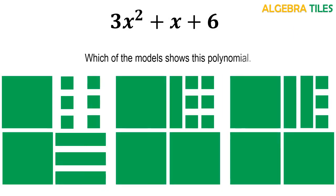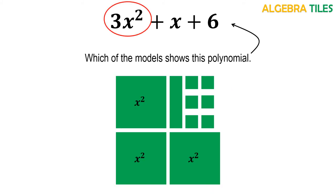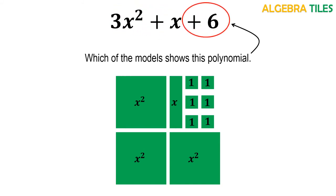I am giving you 3 models and you are supposed to pick the one which correctly shows the given polynomial. You can easily see that the middle model is the right one, because the polynomial has 3x squared, 1x, and 6 ones tiles. This is how we convert the abstract concept of algebra into something we can see, touch, and work with. That is all about algebra tiles — now let's use them to do some operations.